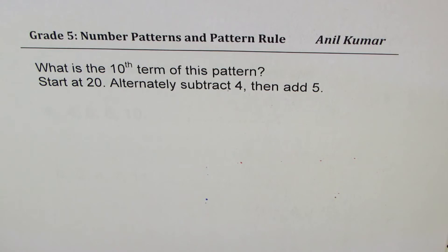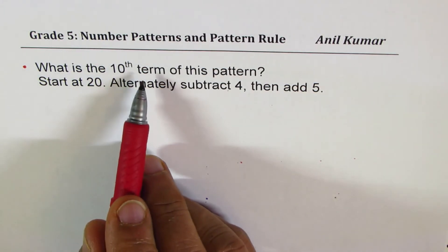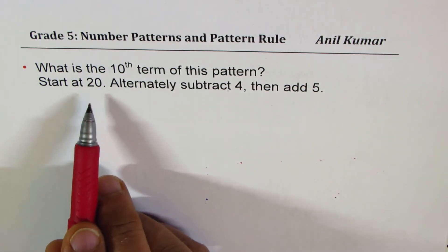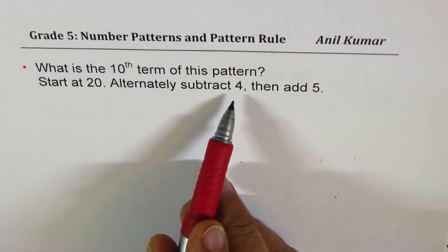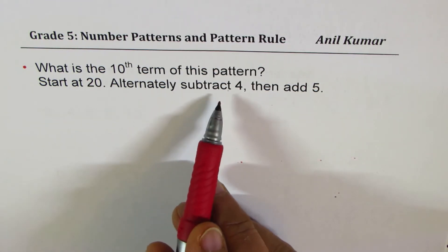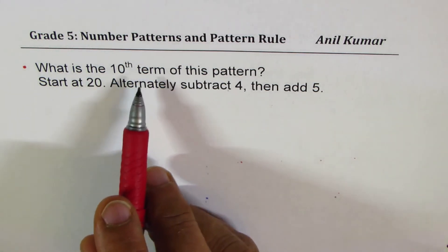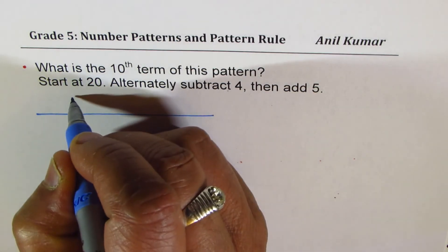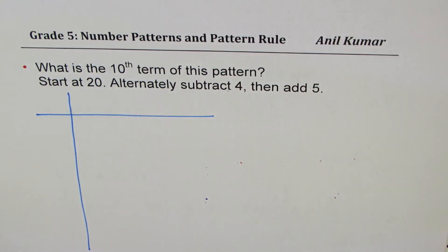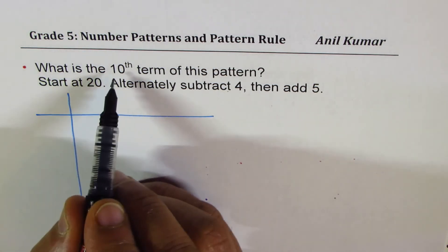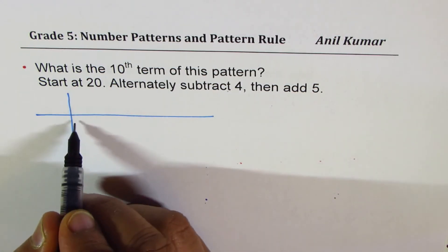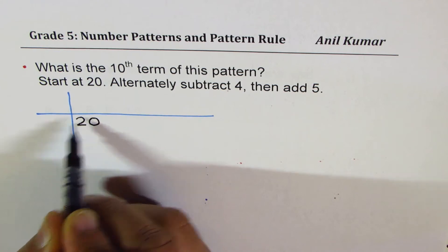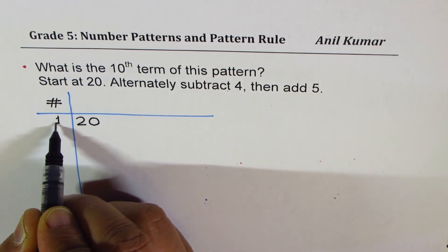The question here for you is: what is the 10th term of this pattern? Start at 20, alternately subtract four, then add five. You have to take away four, then add five, and get the 10th term. So the first term is 20. We will write the term number and say the first term is 20.